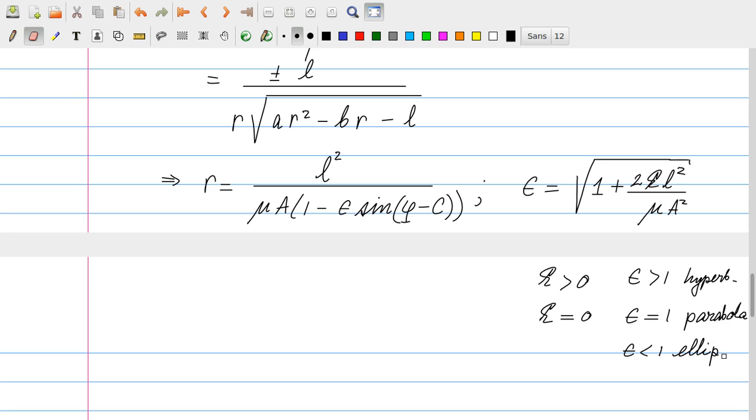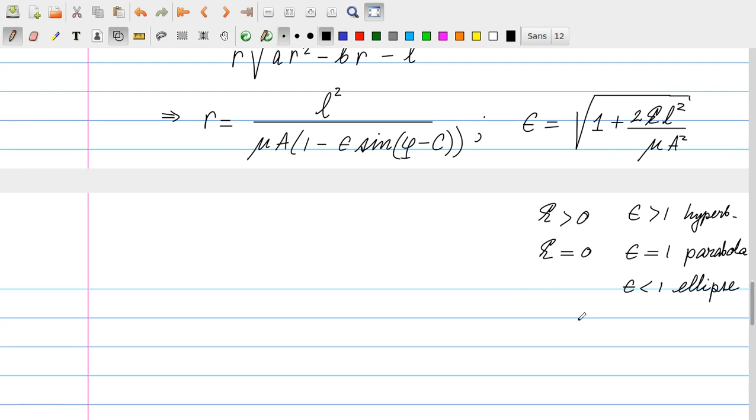And for the case where E is smaller than zero, we have an ellipse. Then there is another special case. And that is the case where epsilon, so this is the case for negative energies. And if epsilon equals zero, then we have a circle. And you can easily see that from the solution. If epsilon is zero, you see that r is constant, so it doesn't vary with the phi. And that's typical for a circular motion.